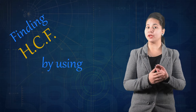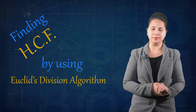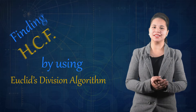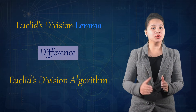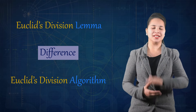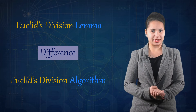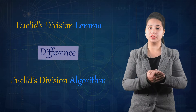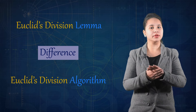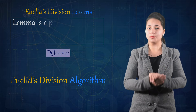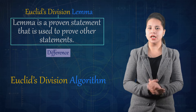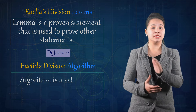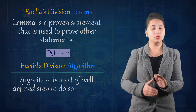Hi guys, in this lecture we will discuss about finding HCF by using Euclid division algorithm. This is the time to discuss the difference between Euclid division lemma and Euclid division algorithm. As we discussed in the previous lecture, a lemma is a proven statement that is used to prove other statements, while an algorithm is a set of well-defined steps to do something.